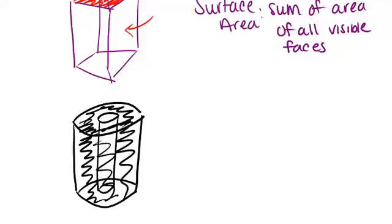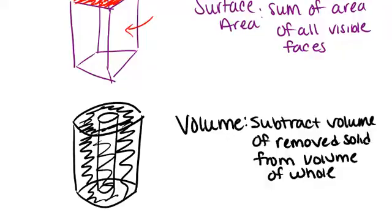In order to find the volume of that, you would find the volume of each one. Find the volume of each cylinder and subtract the volume of the smaller cylinder from the volume of the larger cylinder. In other words, you would subtract the volume of that removed solid from the volume of the whole total cylinder.